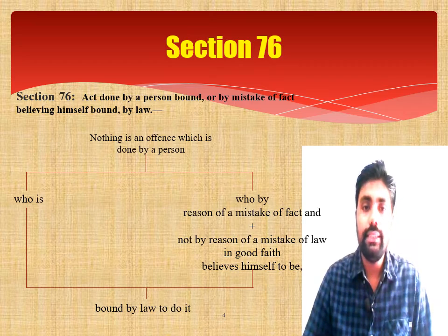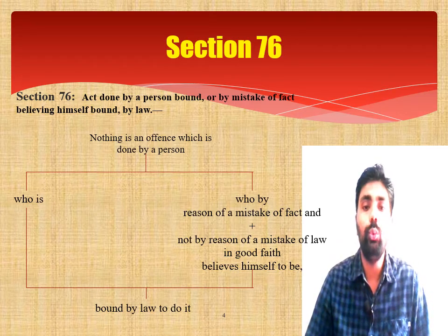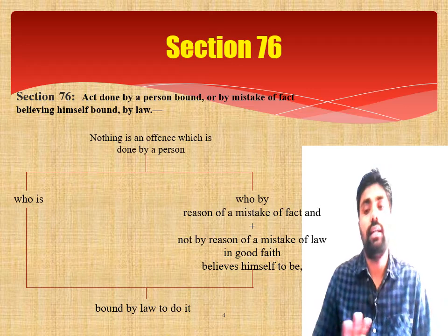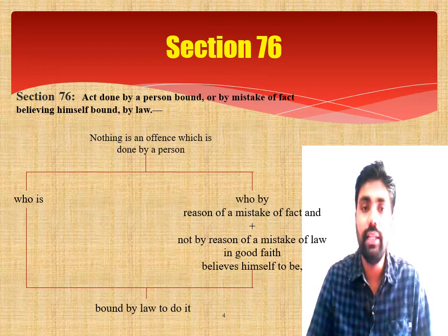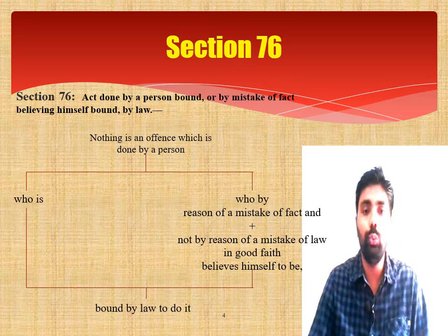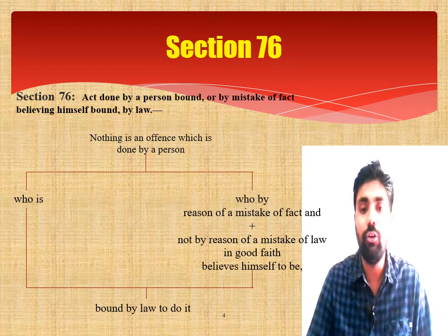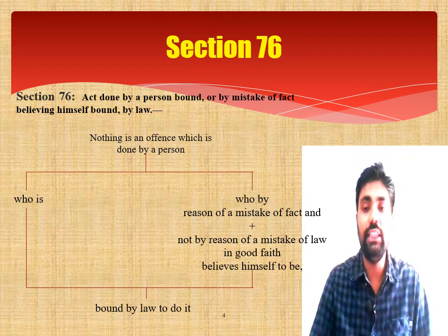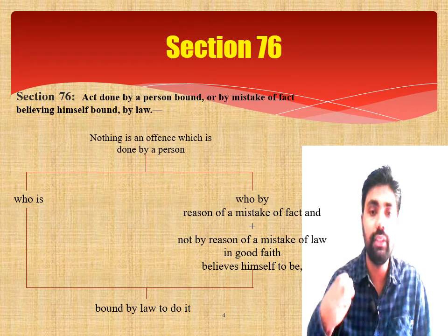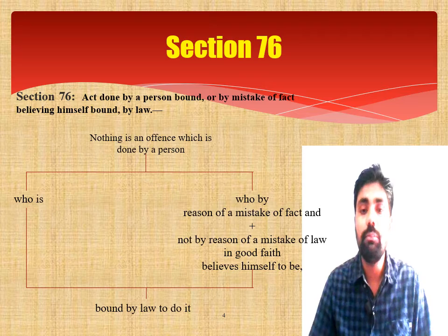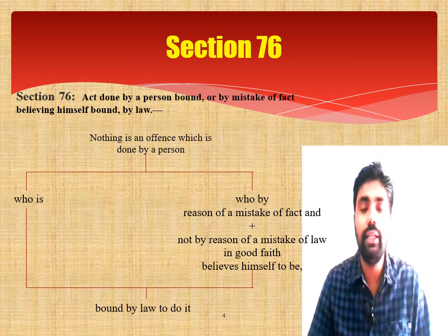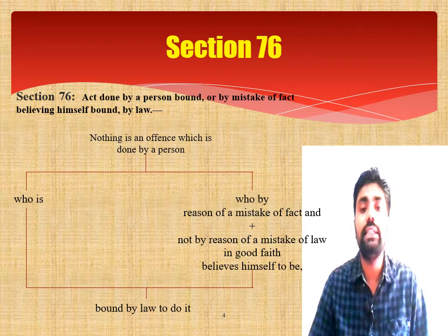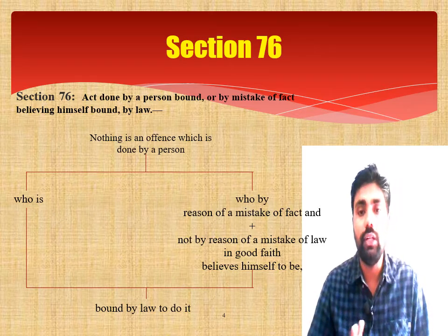Section 76 states: 'Nothing is an offense which is done by a person who is bound by law to do it.' You have to read the first line with the last line. If the person is bound by law to do it, then it is not an offense at all — even if he committed what would otherwise be murder. For example, if an officer orders a constable to open fire on a mob, the constable is bound by the order of his superior and therefore it shall not be an offense.